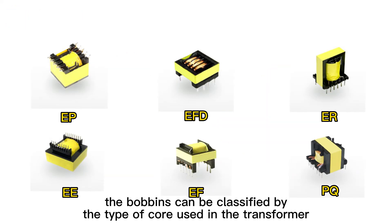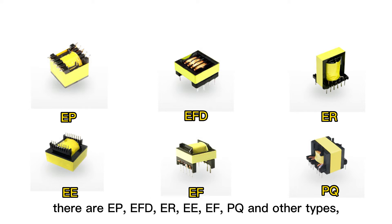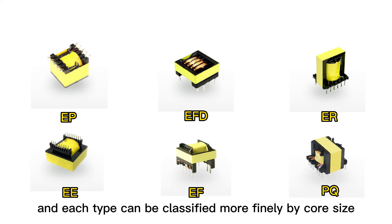The bobbins can also be classified by the type of core used in the transformer. In this way, there are EP, EF, DER, E, BQ, and other types, and each type can be classified more finely by core size.